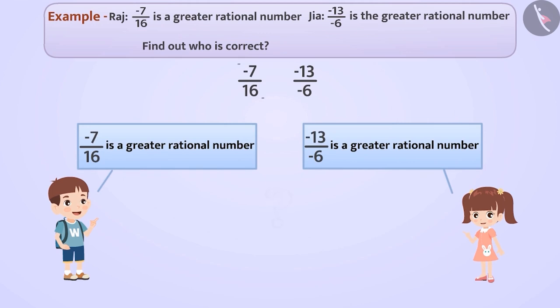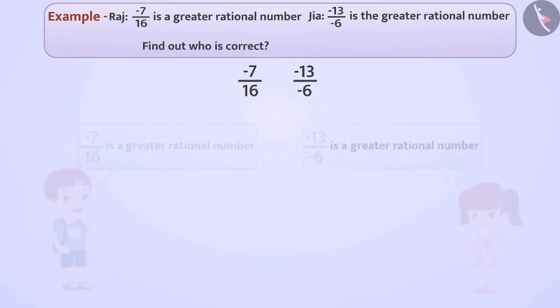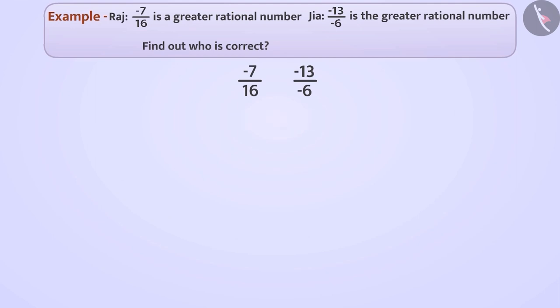By comparing minus 7 by 16 and minus 13 by minus 6, we can find out who is correct between the two. First, we will convert the denominators of both rational numbers into positive integers, which helps us in understanding whether the rational number is positive or negative.